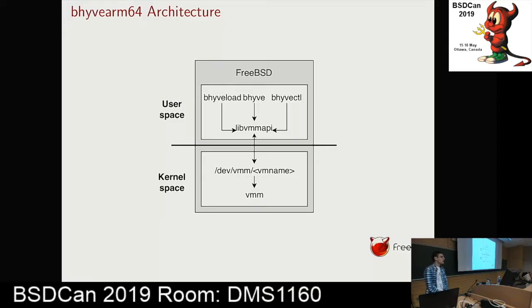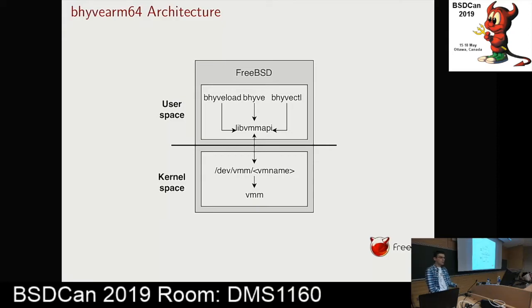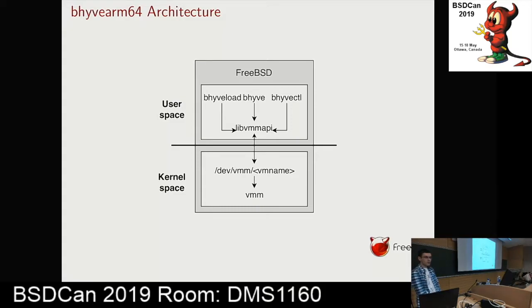BHyve164 has the same components as BHyve for AArch64 and ARMv7. The hypervisor is implemented as a kernel module called VMM. The user uses three user-space programs to control a virtual machine: BHyveload to create a virtual machine, BHyve to start it, and BHyvectl to destroy it. Each virtual machine is uniquely identified by a special device entry under /dev/vmm. The user-space programs use library functions implemented in VMM API, which serve as wrappers over ioctl calls issued to that special device.